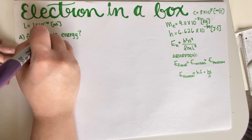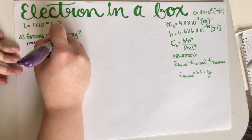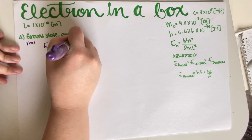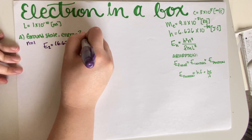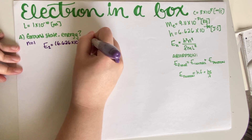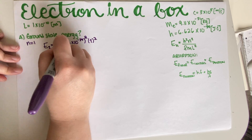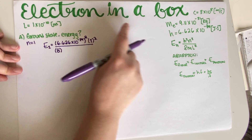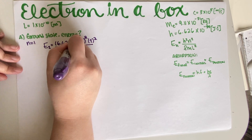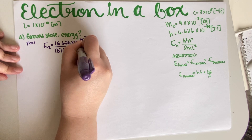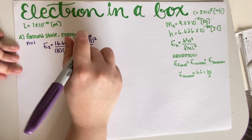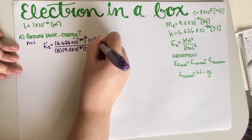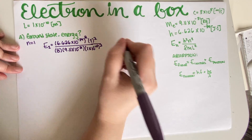So we calculate E₁ = h²n² / (8mL²). We use h = 6.626 × 10⁻³⁴, n = 1, the mass of the electron m = 9.11 × 10⁻³¹ kg, and the box length L = 1 × 10⁻¹⁰ m, then we put this on a calculator.